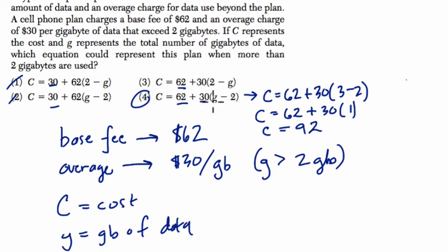I can't plug in less than 2 for G because this only applies when we go over our amounts. So any other choice, you can try it for 3, for example, it just won't work. If you try 3 for gigabytes here, you get 2 minus 3, which is negative 1, and then you instantly have 62 plus negative 30, and your total cost would be lower. It would be $32.